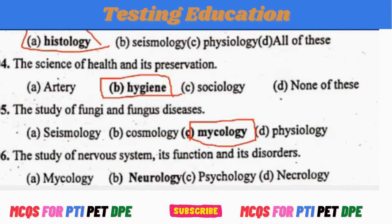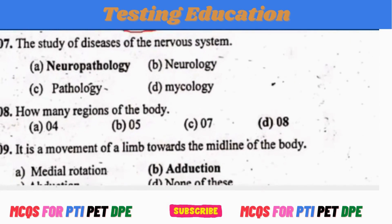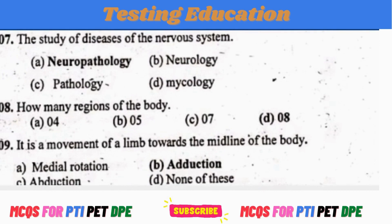The study of the nerve system, its function and its disorder is Neurology. The study of disease of the nervous system is also called Neurology.